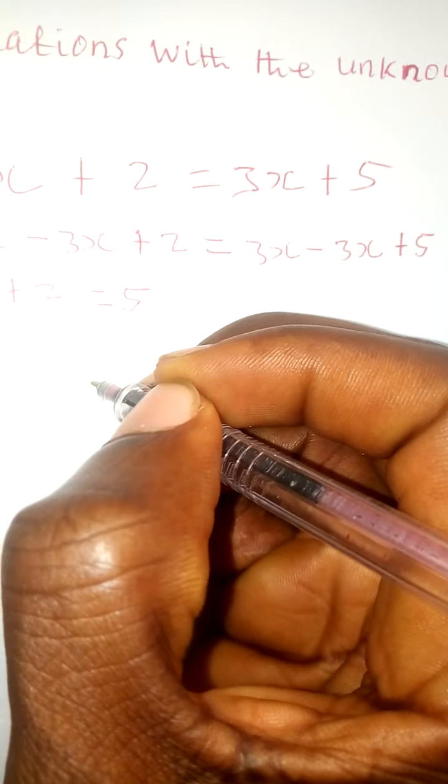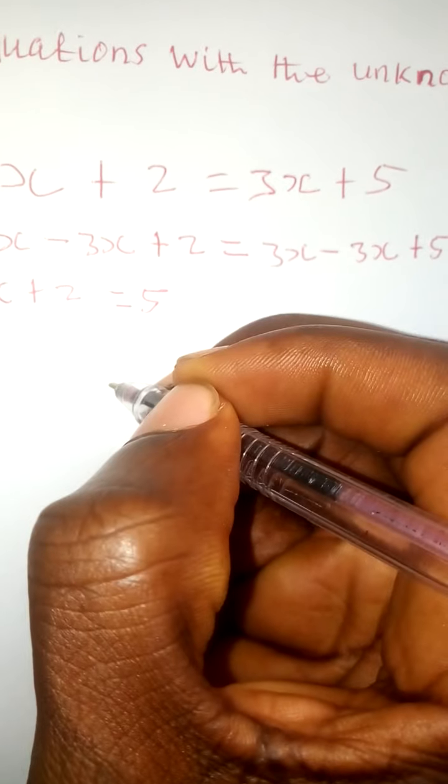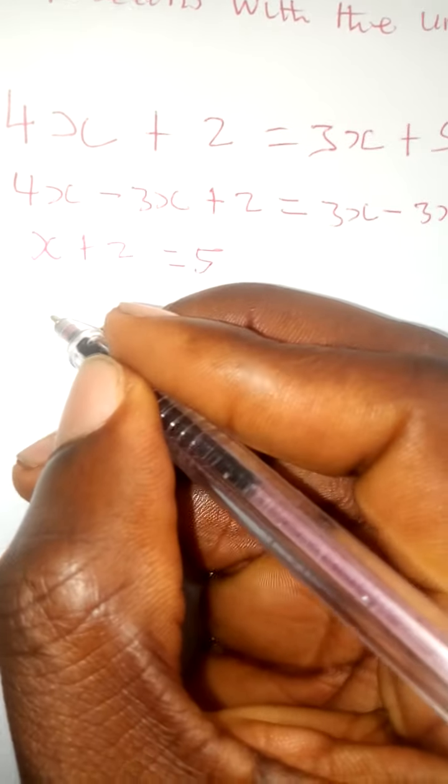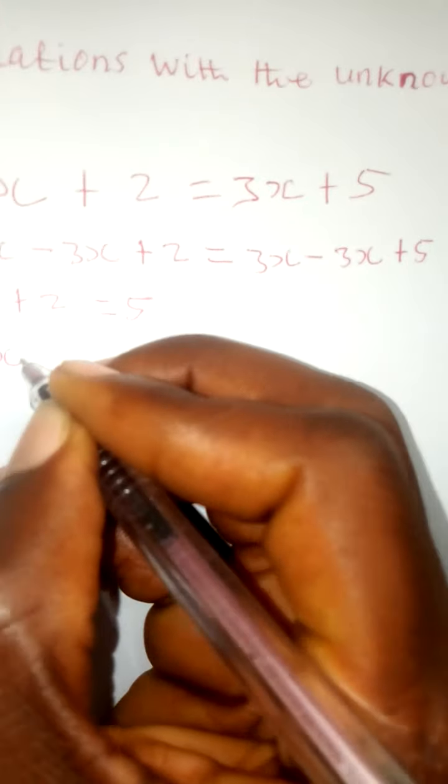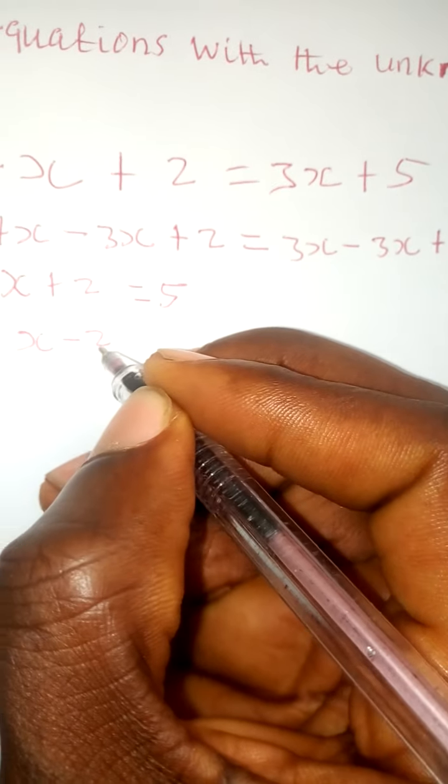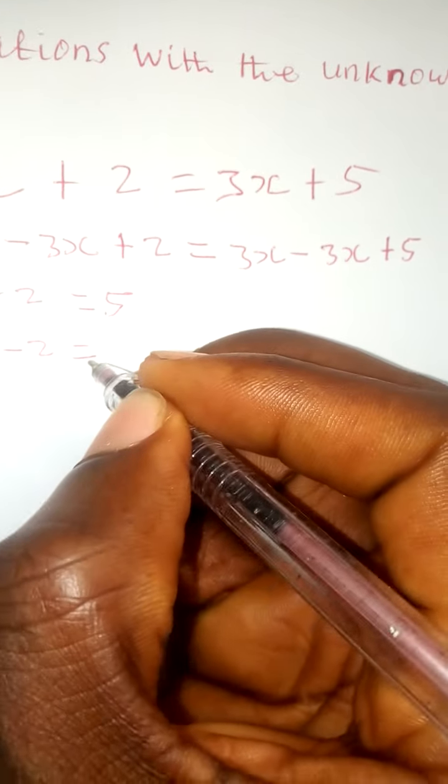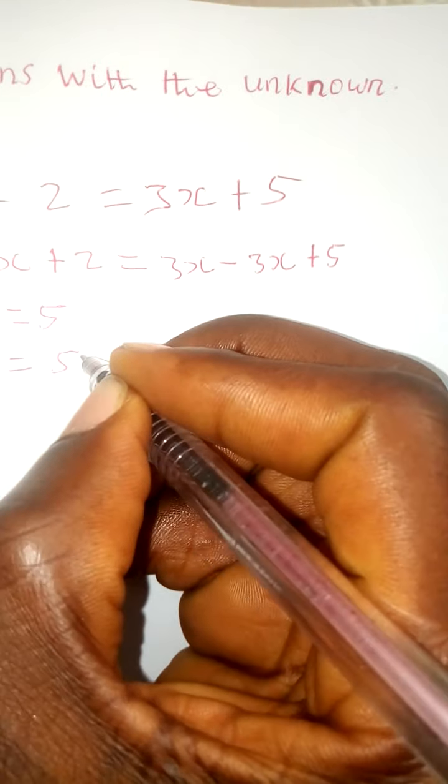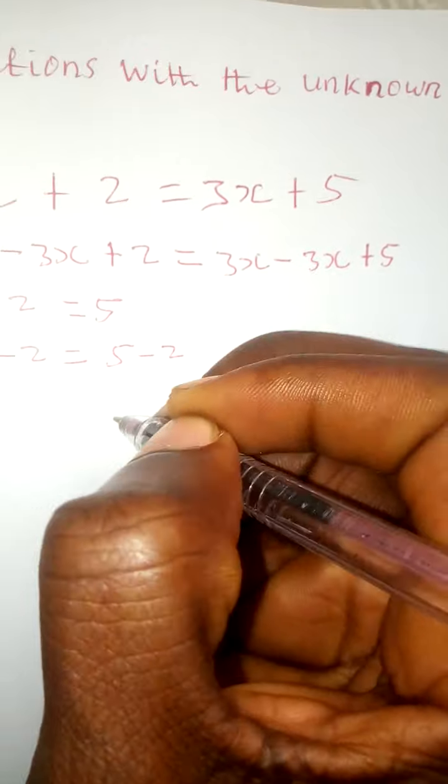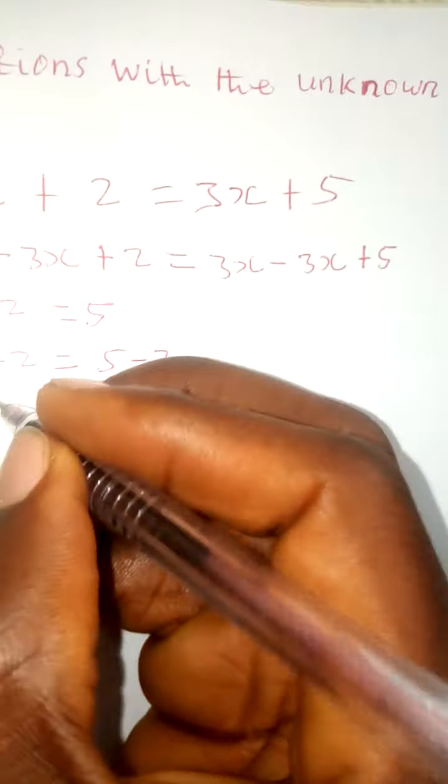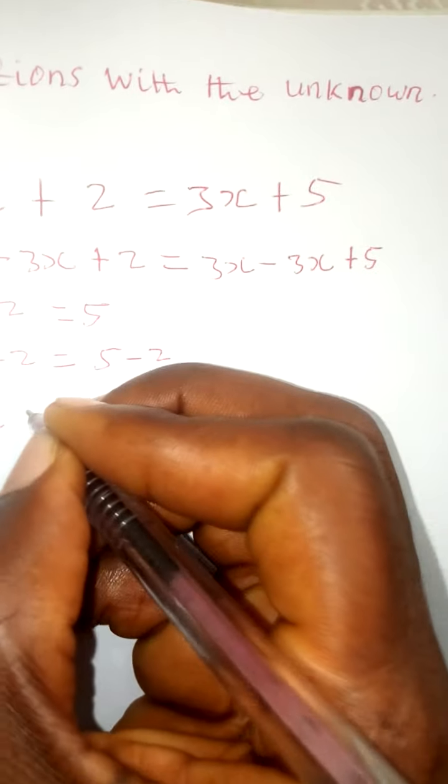You know that 3x minus 3x is already 0, so 0x. We're going to have x plus 2, which equals 5 minus 2, when we subtract 2 from both sides.